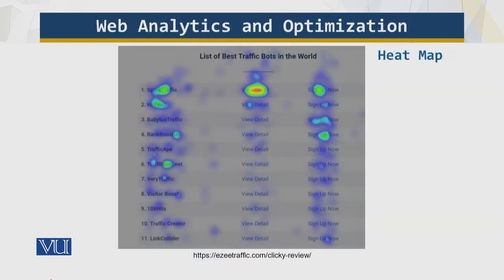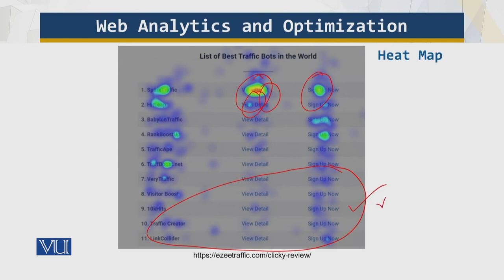This is what is called a heat map. What it is showing is where the users are looking — they are looking at certain areas more frequently, which generates a heat map. This area is not getting a lot of attention, so maybe you need to work on it, while this area is getting more attention.